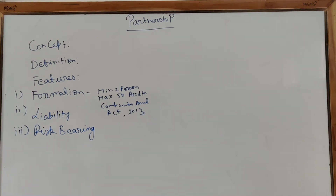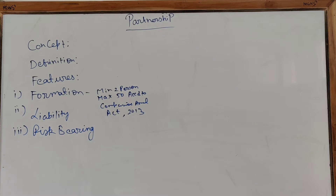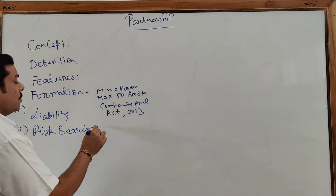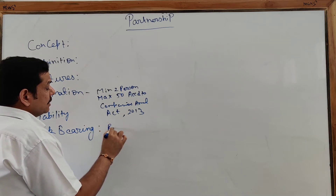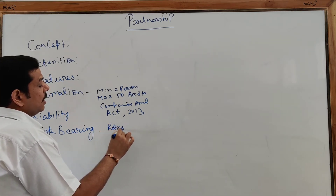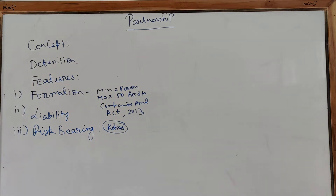Feature — Risk Bearing: Partners bear the risk involved in running the business as a team. The reward comes in the form of profit, which is shared by the partners in an agreed ratio. However, they also share the losses. In order to bear the risk, they decide their ratios — how profits will be shared and how losses will be shared.